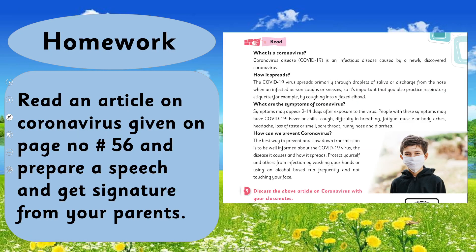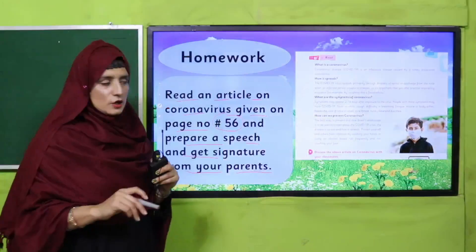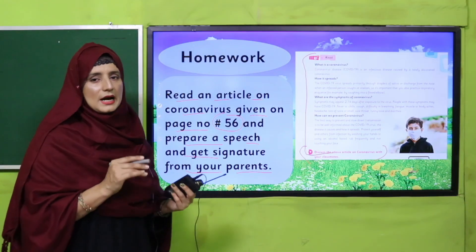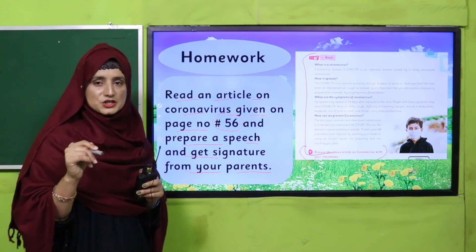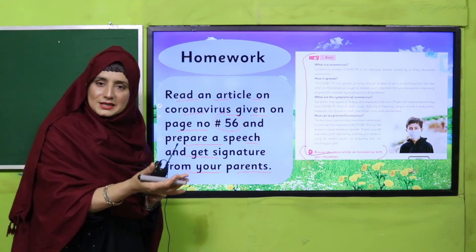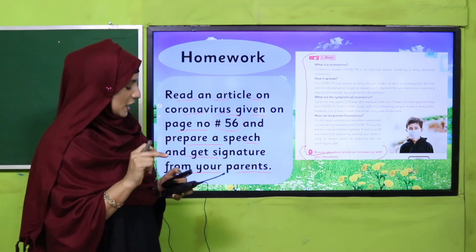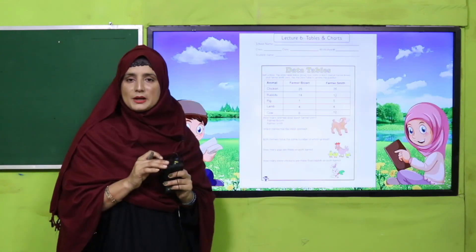What's your homework for today? Read the article on coronavirus on page number 56 and prepare a speech. Get a signature from your parents. On page 56, there is an article about coronavirus and Question Number 9 to do. Discuss it with each other, prepare the speech at home, get your parents' signature, and the next day give this speech in front of your class.